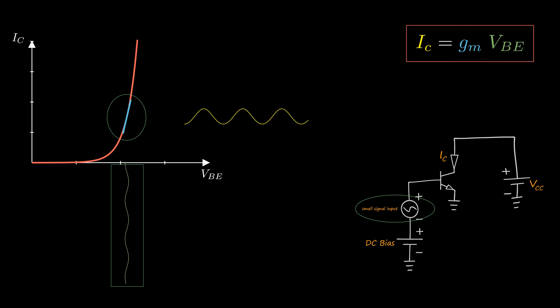The higher the slope, the higher will be the voltage to current conversion. That slope is called the transconductance of the transistor.